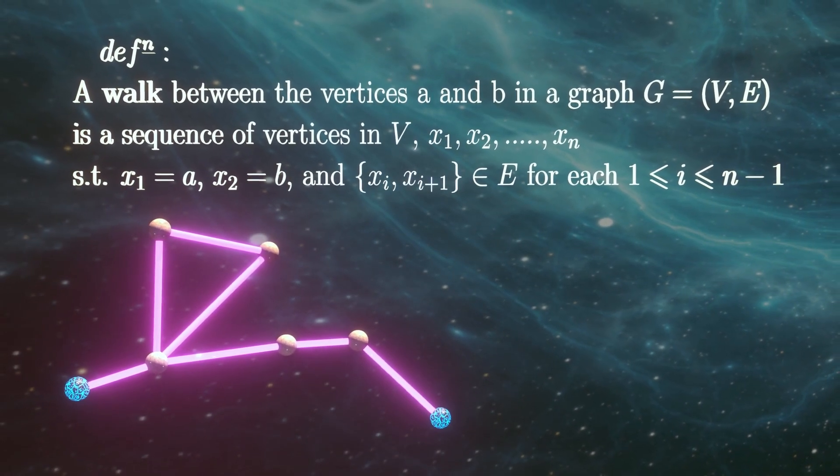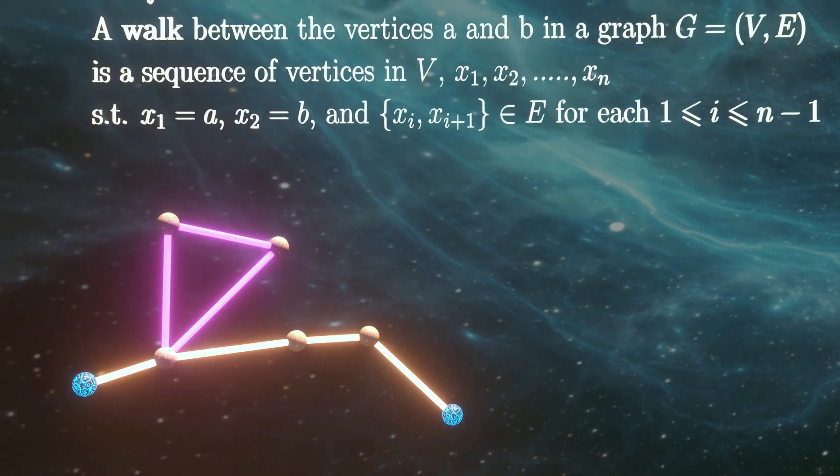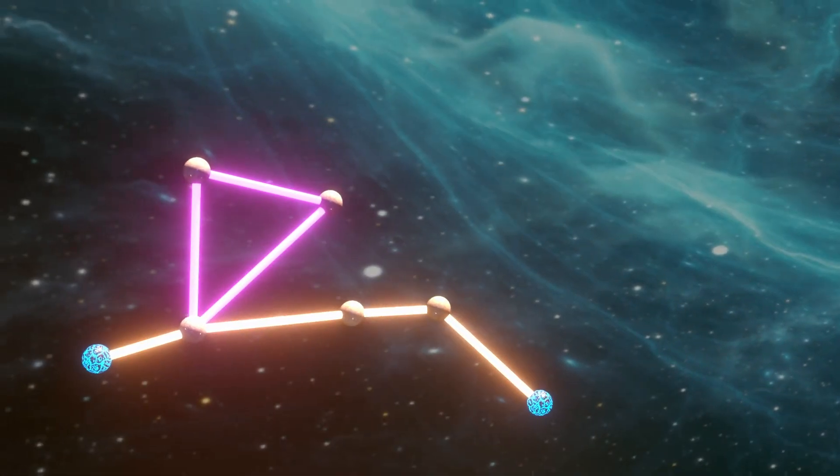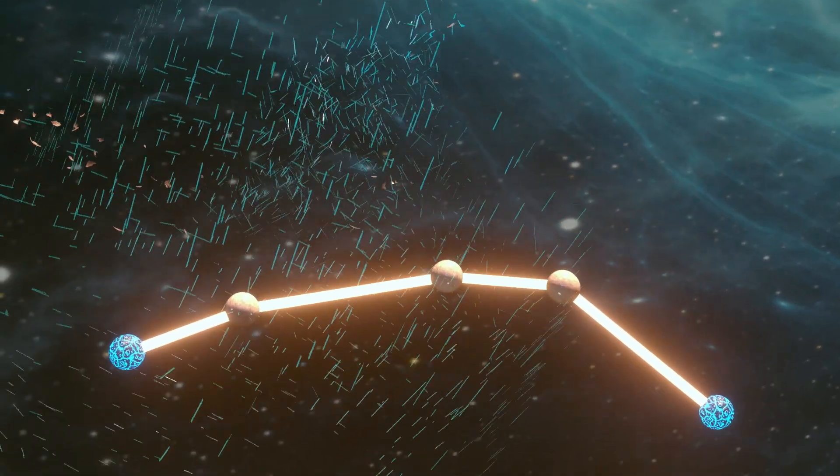And intuitively, it's quite clear that if there's a walk between two points, then that walk will contain a path in it. But showing this is not so obvious, and you can do it by this powerful method I mentioned earlier of being greedy and taking what you want. That's on the problem sheet.